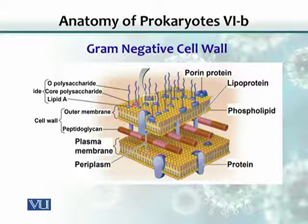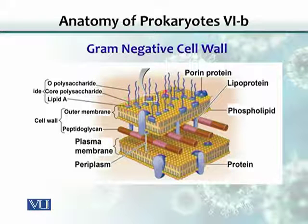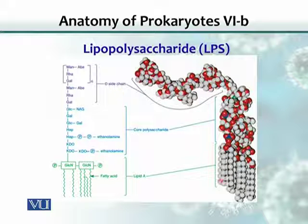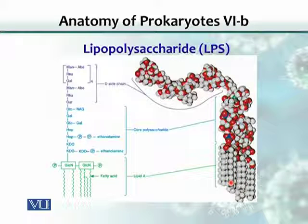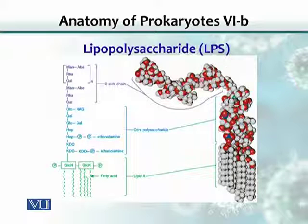Another visible feature we must notice is the presence of these molecules here. They are called lipopolysaccharides, or LPS. LPS consists of three parts: one is Lipid A, which is inserted into the lipid bilayer of the outer membrane; then there is a core polysaccharide; and then there is the O-antigen chain. So these are the three components of LPS.